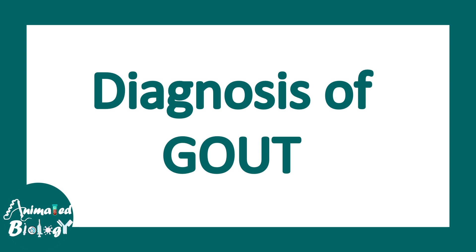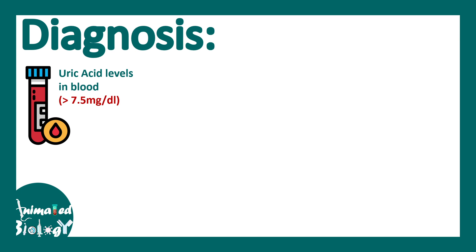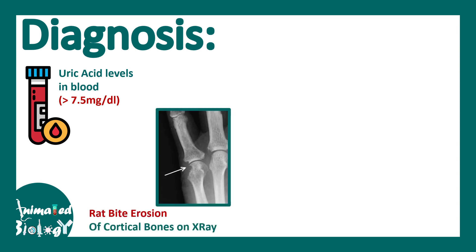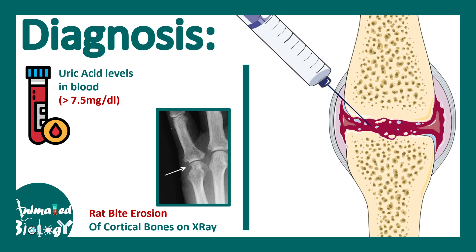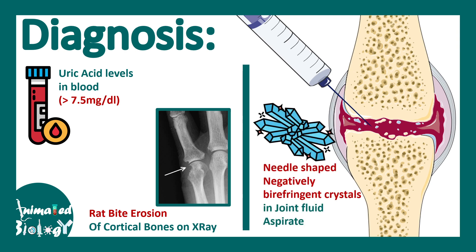Diagnosis involves blood tests where we measure the level of uric acid; a level greater than or equal to 7.5 mg/dL indicates hyperuricemia. However, uric acid levels can be normal in gout, so radiological imaging may be used — rat bite erosion of cortical bone on radiology indicates gout. Definitive diagnosis involves aspiration of the affected joint fluid and analyzing negatively birefringent, needle-shaped monosodium urate crystals.